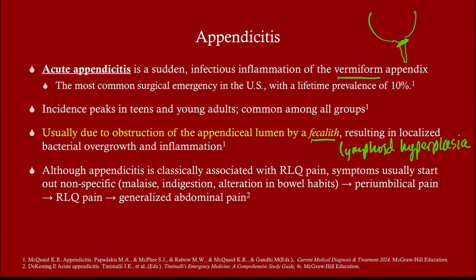Appendicitis is classically associated with right lower quadrant pain, but when it starts, it begins peri-umbilical and then gradually migrates to the right. If untreated, the pain gets worse and worse, and eventually may briefly subside — but then it comes back with a vengeance in the form of peritonitis due to rupture. That's when you get the guarding, rebound tenderness, and all that. It's important to know this is an evolving pain.